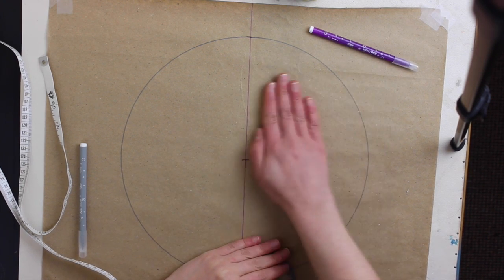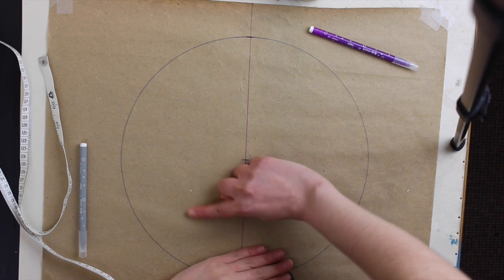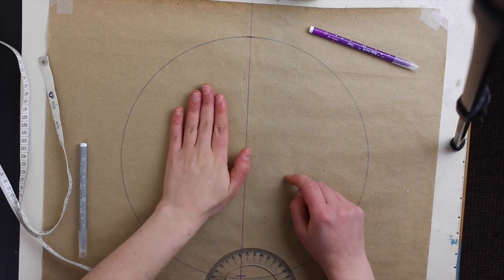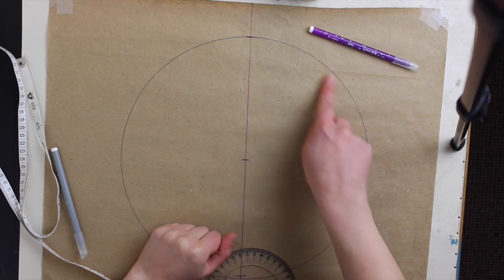So first of all, here is the pattern. We will only use, or I will only use, half of it since it's symmetrical. So I don't need to do the work for all of it, just half of it and we'll cut it out later on. But feel free to use the whole thing if you find it easier.